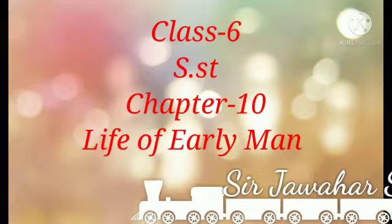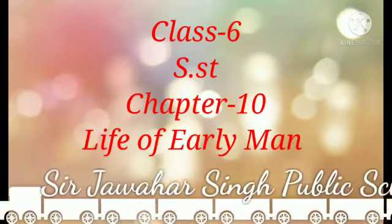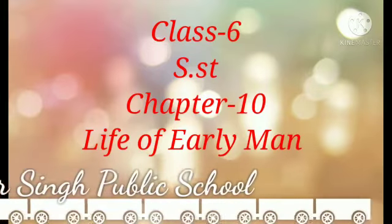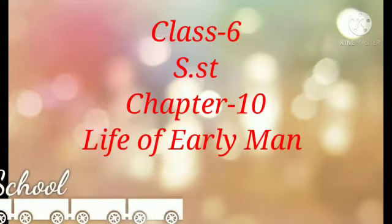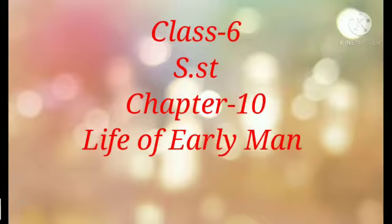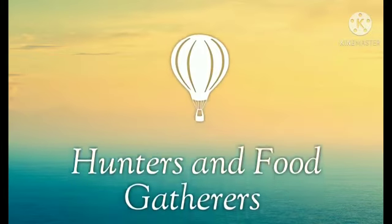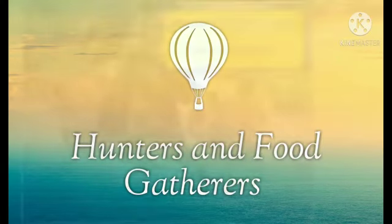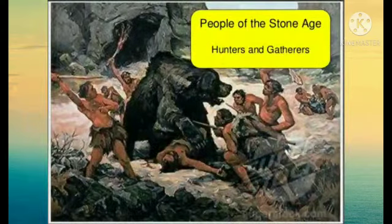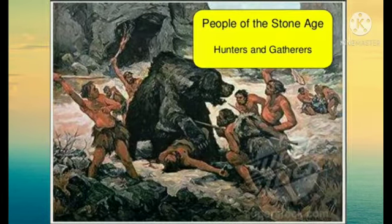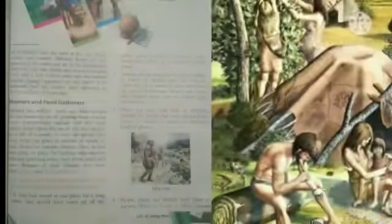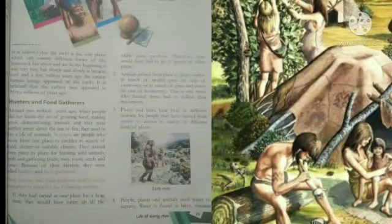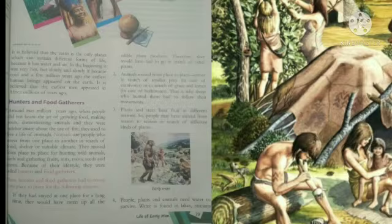Hello students, today we will read Chapter 10, Life of Early Man from your SST book. It is believed that the Earth is the only planet which can sustain different forms of life because it has water and air. In the beginning it was very hot, but slowly it became cool, and a few million years ago the earliest human beings appeared on the Earth.